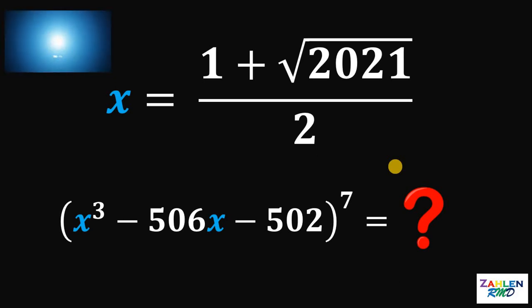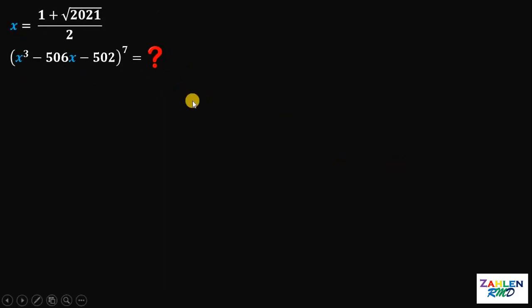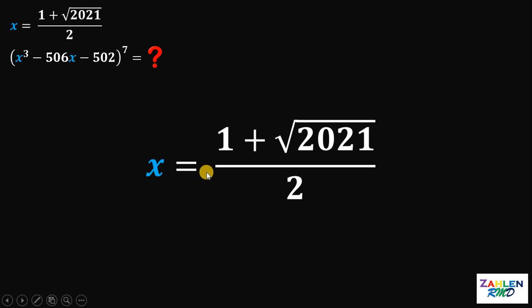Alright, time's up. Now, let's answer this question together. Our goal is to solve for the value of x cubed minus 506x minus 502 raised to 7. On this question, we're given one equation, which is equivalent to x equals 1 plus square root of 2021 all over 2.